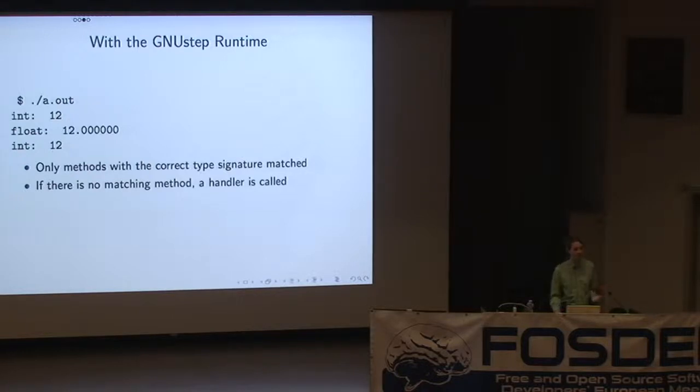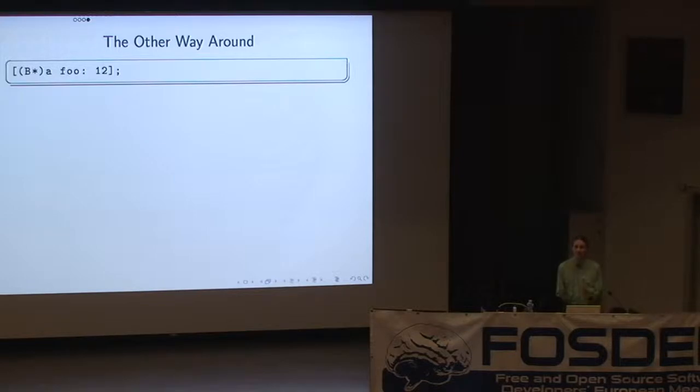So with the GNU step runtime, we do dispatch based on the type as well. So now we're calling the correct function, and that's a bit nicer. So we're only matching methods with the correct type signature when we do the lookup. If there's no matching version, then we call a handler and that can return a fixup version. So if you've got correct, well-written Objective-C code, it just works. And I enabled this by default about six months ago, and I was really shocked that it didn't break loads of people's code. We found a few bugs in GNU step using it, but mostly it just stuff works.